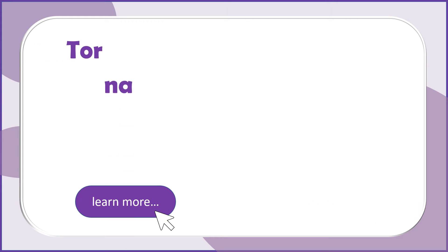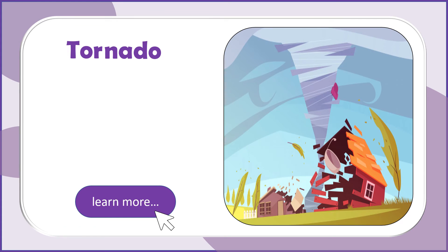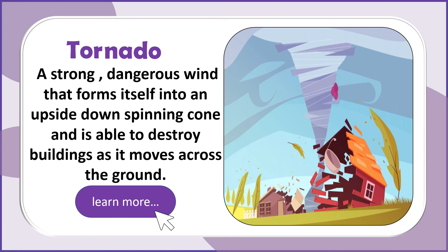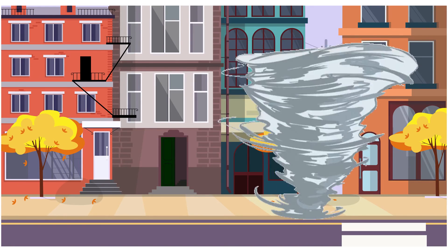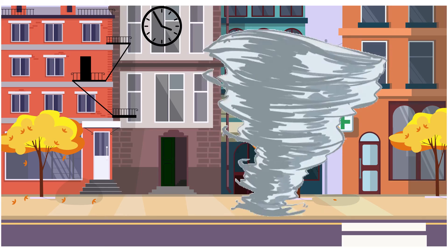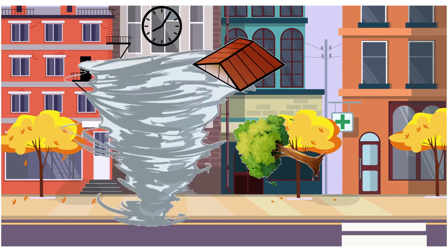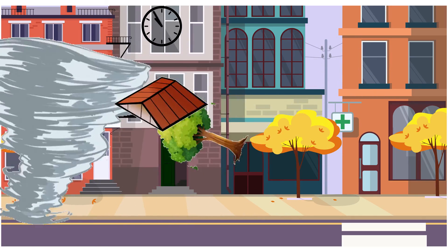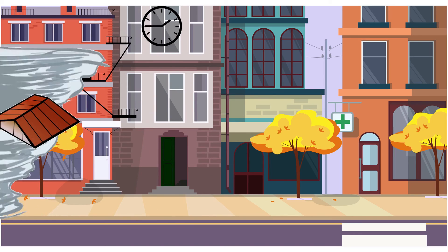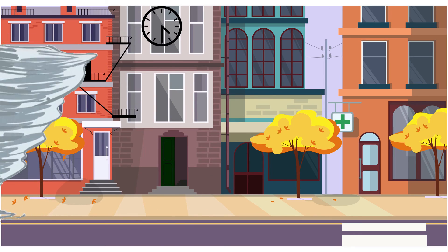Tornado. A strong, dangerous wind that forms itself into an upside-down spinning cone and is able to destroy buildings as it moves across the ground. A tornado can last from a few minutes to more than an hour. It can damage trees, roofs of houses, or worse, can rip buildings off their foundations.